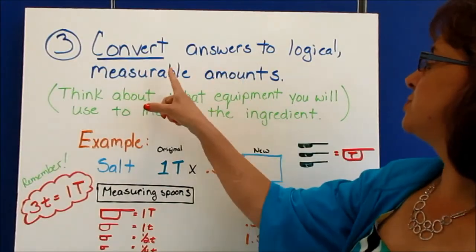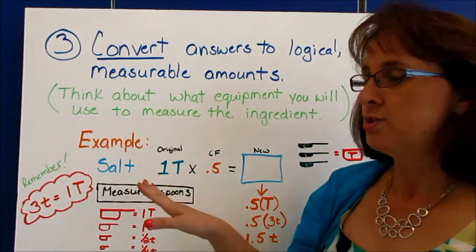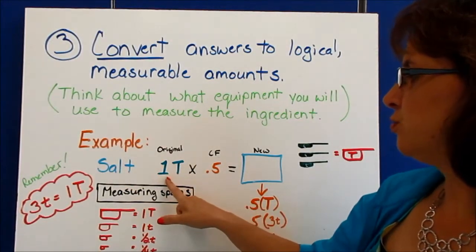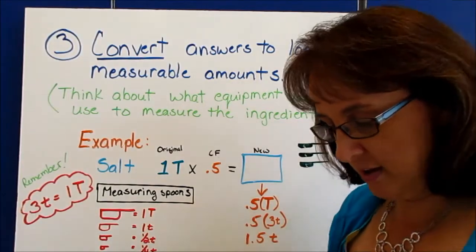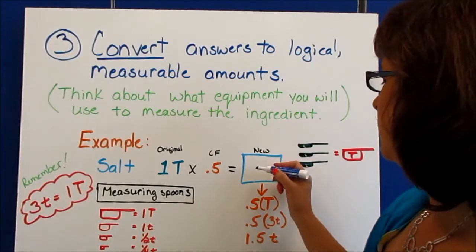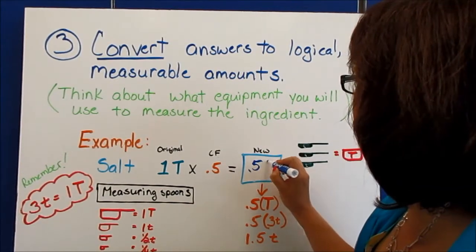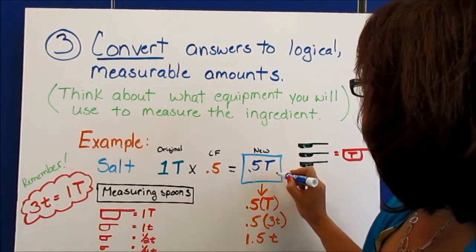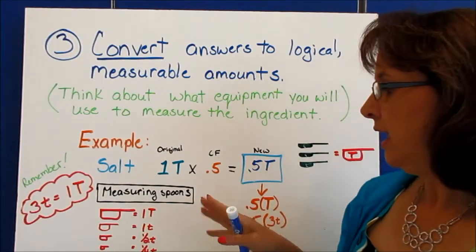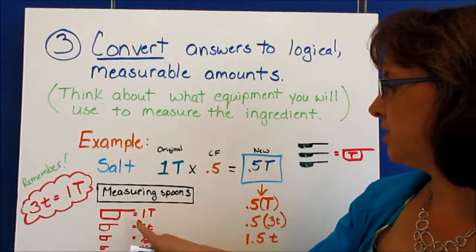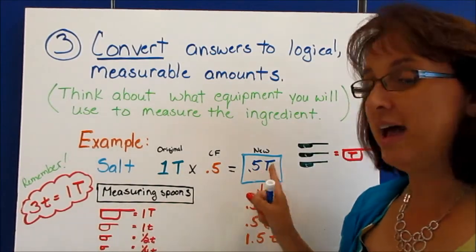We're going to convert answers to logical measurable amounts — that's step three. We need to think about what equipment we need to use to measure. So for salt: if our original recipe called for one tablespoon of salt and our conversion factor was 0.5, that would make our new amount 0.5 of a tablespoon, which is equal to one half of a tablespoon. But we know our measuring spoons — we have a one tablespoon, a one teaspoon, a half teaspoon, and a fourth teaspoon. We do not have a half of a tablespoon.